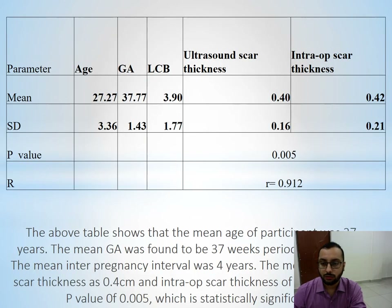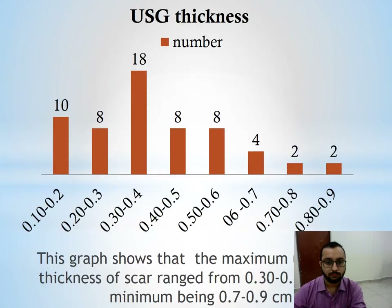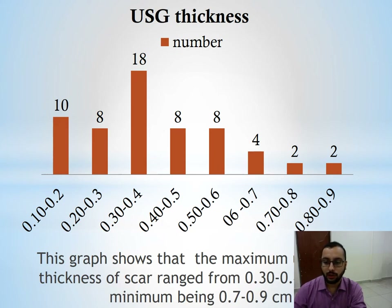The table shows that the mean age of participants was 27 years. The mean gestational age was found to be 37 weeks. The mean interpregnancy interval was 4 years. The mean ultrasound scar thickness was 0.4 cm and intraoperative scar thickness was 0.42 cm, with a p-value of 0.005, which is statistically significant. This graph shows that the maximum ultrasound thickness of scar ranged from 0.30 to 0.4 cm while the minimum being 0.7 to 0.9 cm.